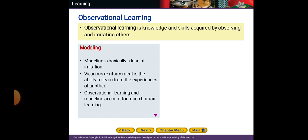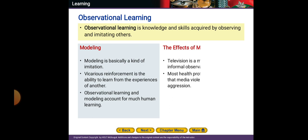If I see someone and try to imitate him or her, it's because their way makes me feel that they're clever, so I'm going to imitate that person. Vicarious reinforcement is the ability to learn from the experiences of others. Observational learning and modeling account for much human learning.